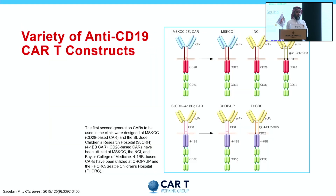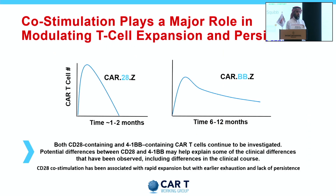These are the two main types of anti-CD19 CAR-T constructs. The main difference is the co-stimulatory domain — we have CD28 and 4-1BB. Compared to 4-1BB, the CD28 co-stimulatory domain is associated with rapid expansion and higher risk of toxicity like CRS and ICANs, but also earlier exhaustion and lack of persistence, as clearly demonstrated in clinical trials using the CD28 CAR-T.